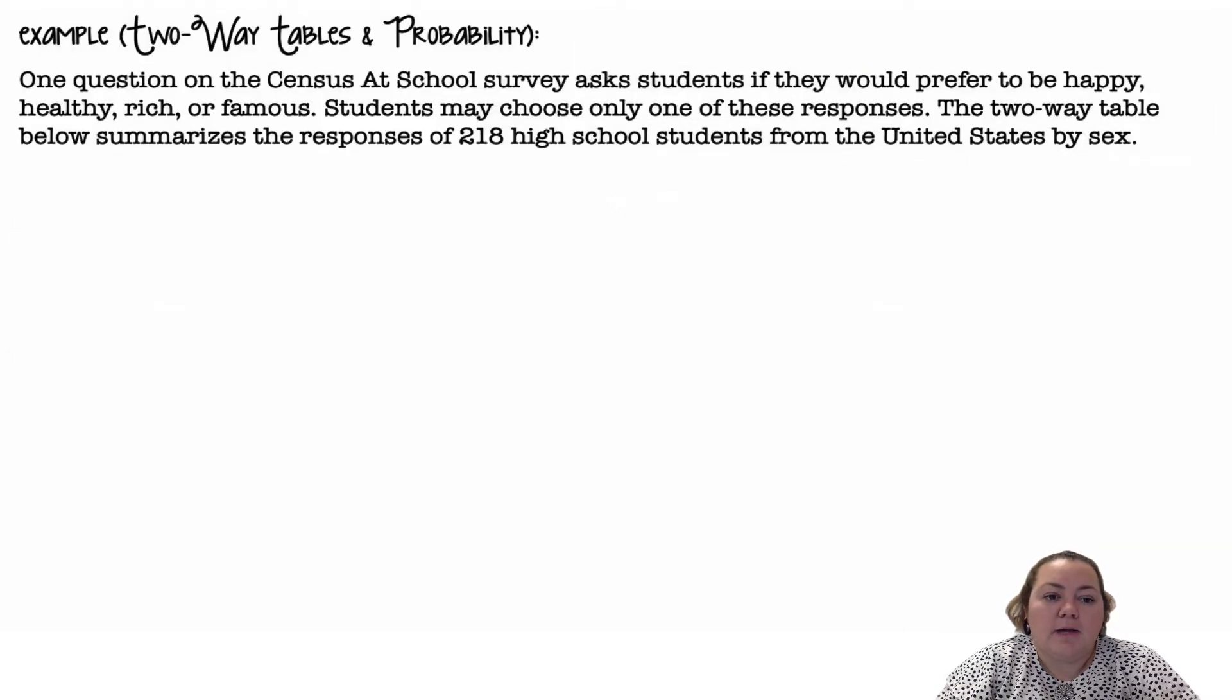A two-way table and probability. One question on a Census at School survey asks students if they would prefer to be happy, healthy, rich, or famous. Students may choose only one of these responses.